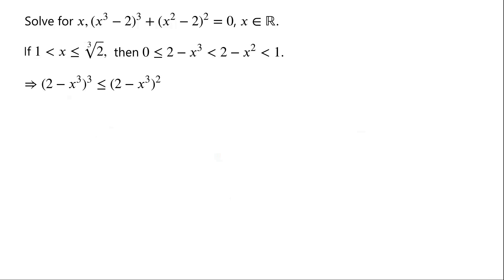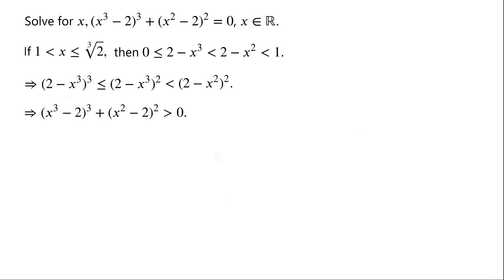As 2 minus x cubed is greater than or equal to 0 and is less than 2 minus x squared, which is less than 1, so 2 minus x cubed, all squared, is less than 2 minus x squared, all squared. This implies that x cubed minus 2, all cubed, plus x squared minus 2, all squared, is greater than 0.